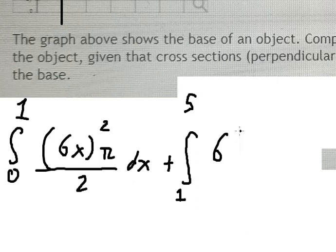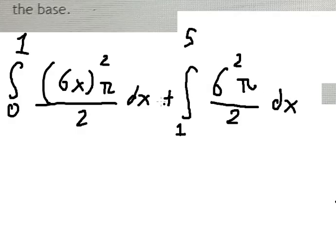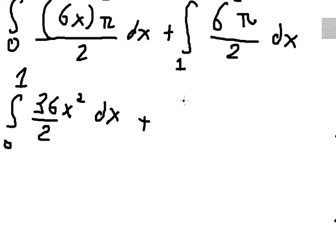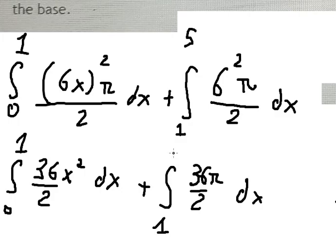Now the next one, from number one to number five, we just have only number six squared, pi over number two, dx. Now we need to calculate these integrals. 6x squared, we have 36x squared divided by two dx.